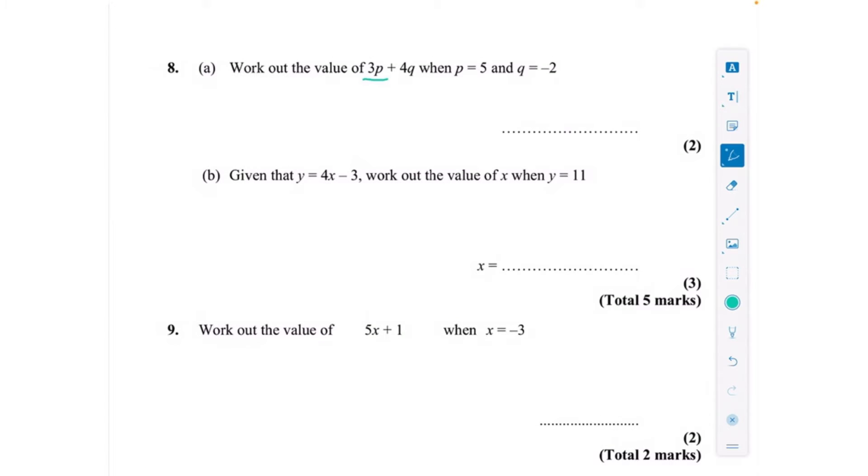For the next question we're asked to work out the value of 3p add 4q when p is 5 and q is minus 2. So that's three lots of p, so three lots of 5, add four lots of q which is four lots of minus 2. 3 times 5, 3 lots of 5 is 15.